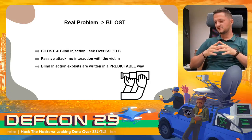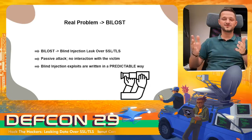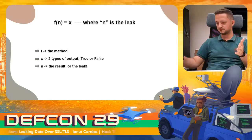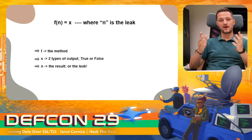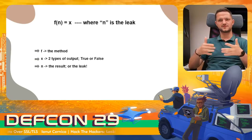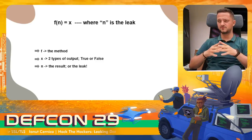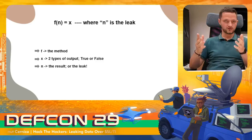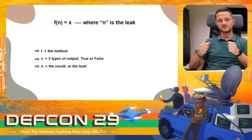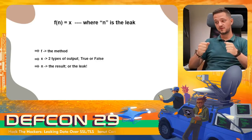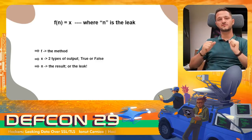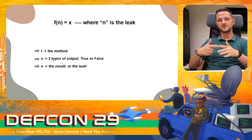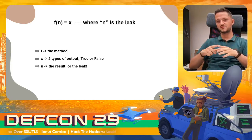This is because blind injection exploits are written in a predictable way. We have F, which is the method — charset, binary search — and we have two types of output taken from the encrypted traffic: true and false. The result, N, which is the input to the function, is the leak. If you can suppose the method and the two types of output, it's a feasible brute force, and you can find the leak by reversing the steps.